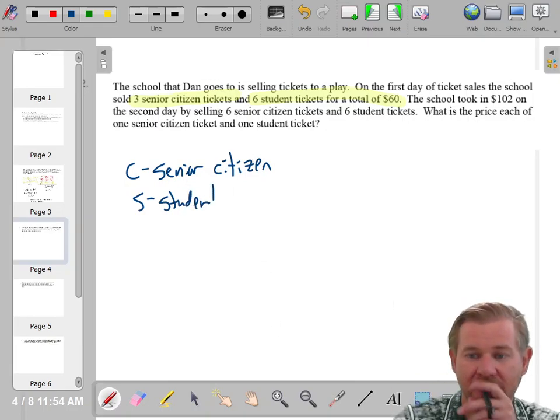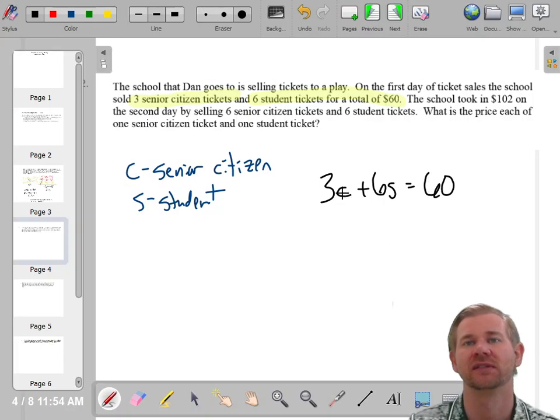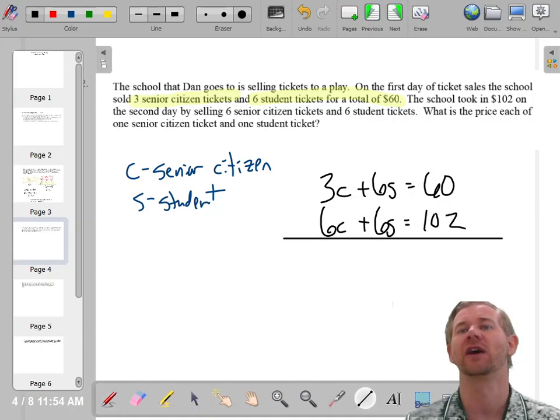You can just use X and Y if you want. And an S will be a student ticket. C for senior citizen, S for student ticket. So my first equation, I would say three senior citizens plus six students gives you 60. Remember, we're using C for citizen. Also, $102 on the second day, six senior citizen tickets and six student tickets. And that got $102. So we have a two variable system.